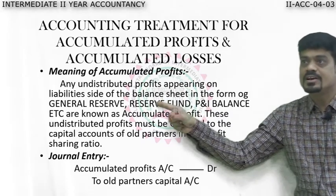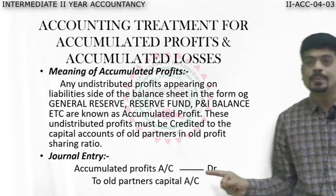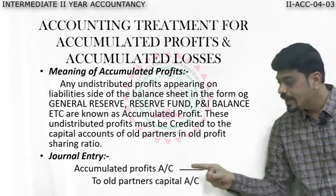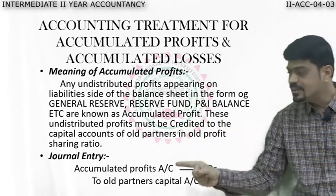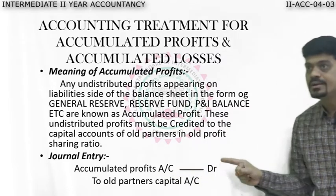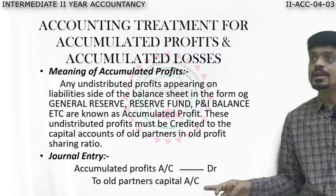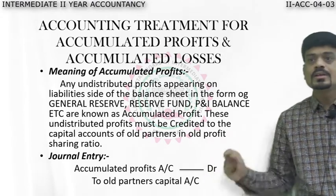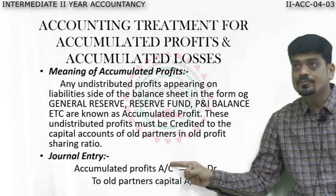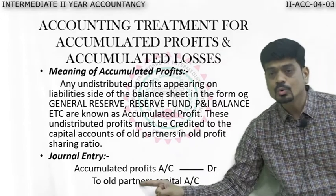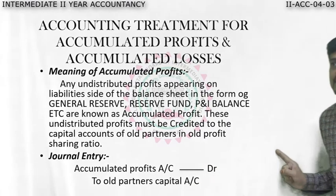For example, if they give general reserve, then: General Reserve Account debit to old partners. Say two old partners are X and Y — to X Capital, to Y Capital. If they mention reserve fund, then substitute: Reserve Fund Account debit to the respective partners' capital accounts. Whatever names of the partners are given, we distribute accordingly. In the accumulated profit account on the debit side, we write the partners' names individually, and in the partners' accounts, we write 'by accumulated profit'.